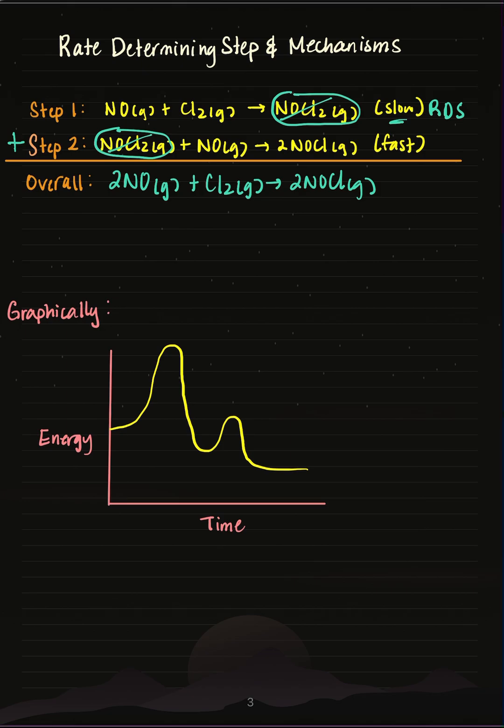My slow step of the mechanism will determine the rate of my overall chemical reaction, because the overall reaction cannot proceed any faster than the slowest step.